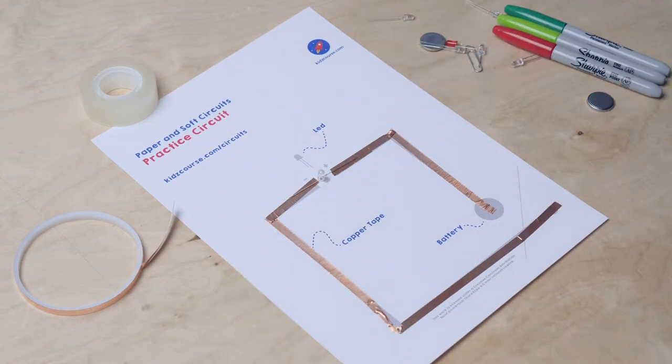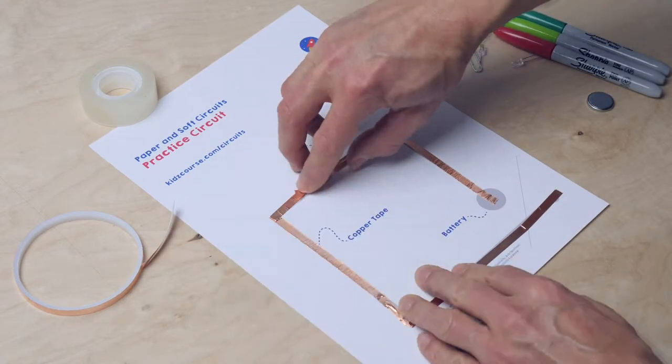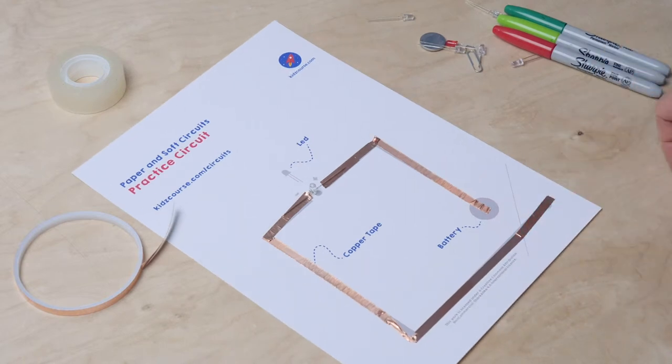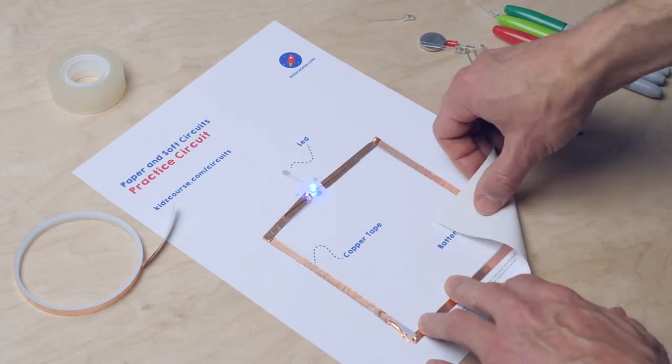To make it even more secure, you can always use a piece of scotch tape on top of it. Then, here is the battery, and fold the corner. It works!